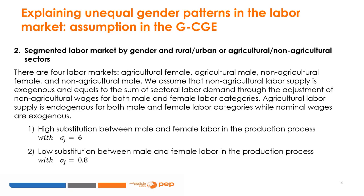The second assumption represents a segmented labor market by gender and rural-urban or agricultural versus non-agricultural sectors. There are four labor markets: agricultural female, agricultural male, non-agricultural female, and non-agricultural male. We assume that non-agricultural labor supply is exogenous and equal to the sum of sectoral labor demand through the adjustment of non-agricultural wages. Agricultural labor supply is endogenous for both male and female labor categories, while nominal wages are exogenous. Two variants are analyzed: high substitution with σj = 6, and low substitution with σj = 0.8.